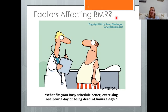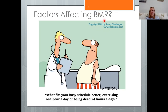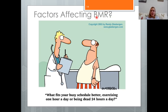Food consumption also affects BMR — eating a lot can increase basal metabolic rate by about 10%, while severely restricting intake can decrease it by about 10%. Activity level plays a role too: exercise expends energy during the bout itself, but also has a lasting elevating effect on resting metabolism after the exercise is over.